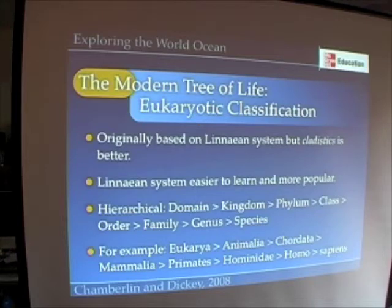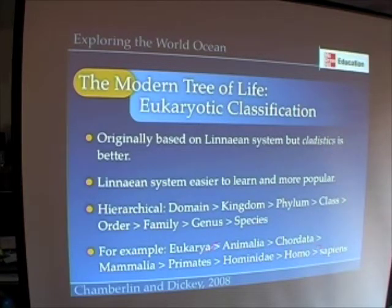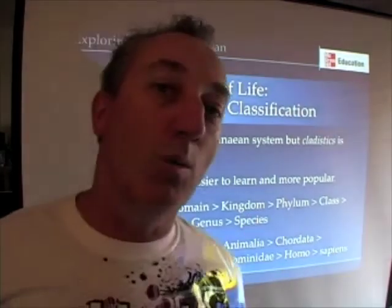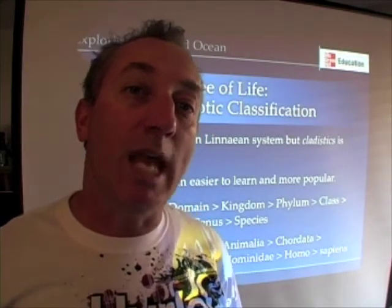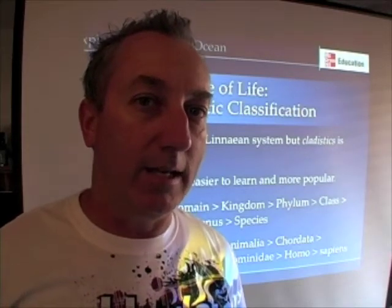If we were to take ourselves, for example, and classify us according to the Linnaeus system, here's what we get. We belong to the domain Eukarya, we're in the kingdom Animalia, in the phylum Chordata, the class Mammalia, the order Primates, the family Hominidae, the genus Homo, and the species Sapiens. We're all Homo sapiens, and I'm sure you knew that. Can you name a chordate that's not a mammal? It'll be on the test.